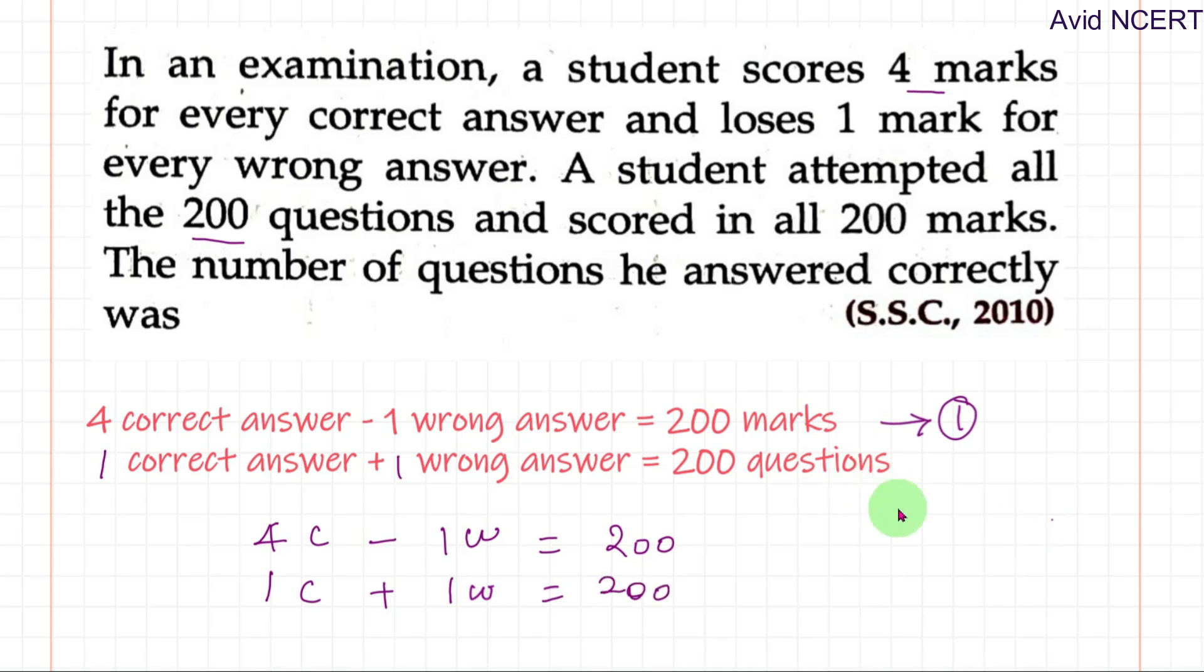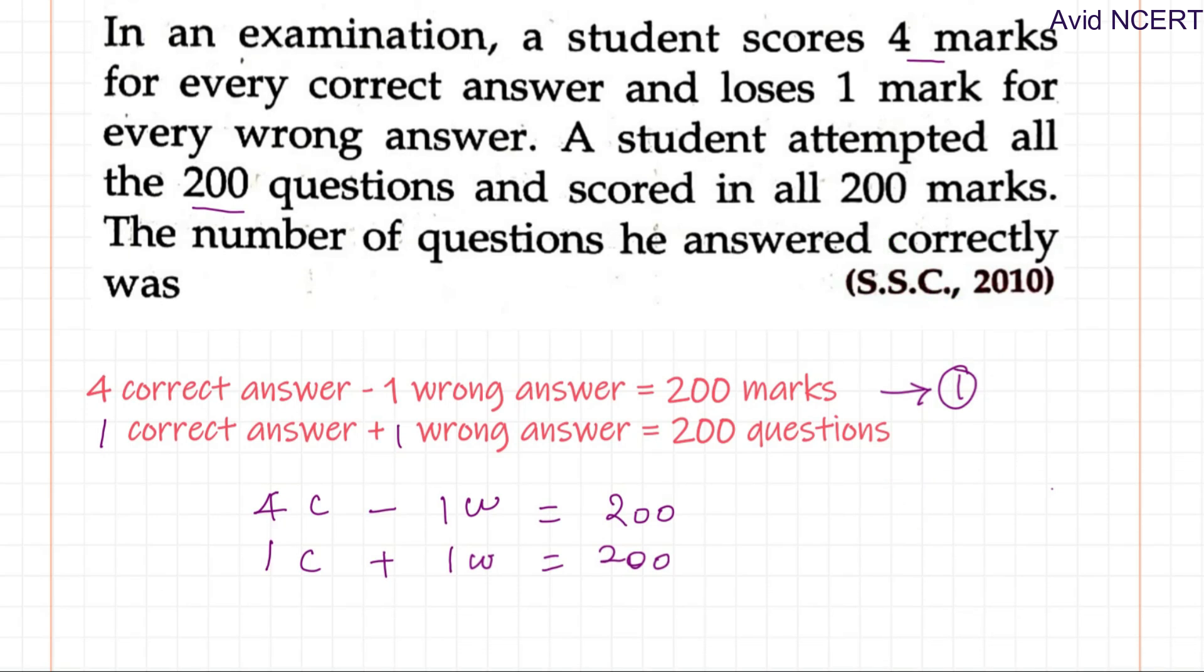So by solving this, we can get the number of answers he answered correctly. That is we have to find the C. So plus and minus gets cancelled, which is 4C plus 1C equals 5C equals 200 plus 200 is 400.